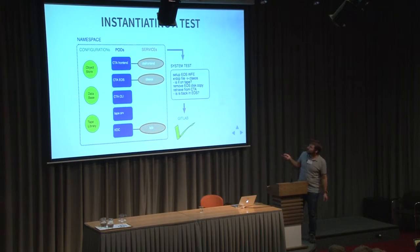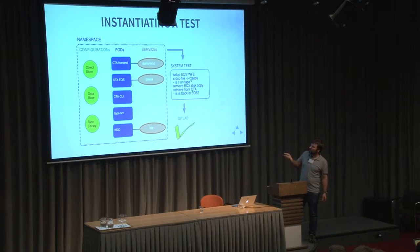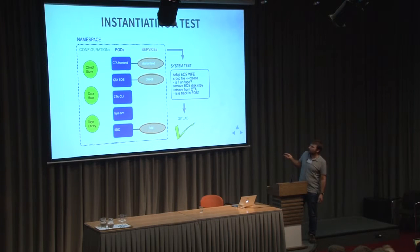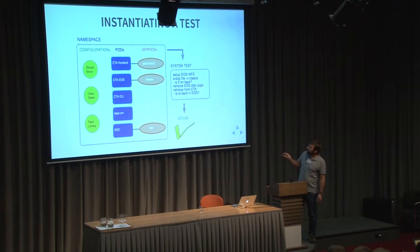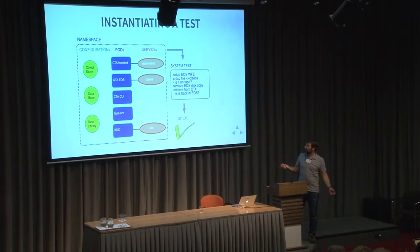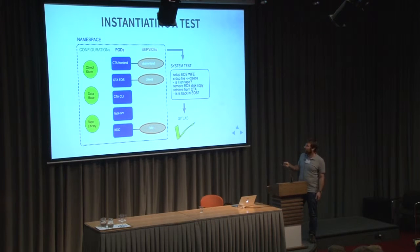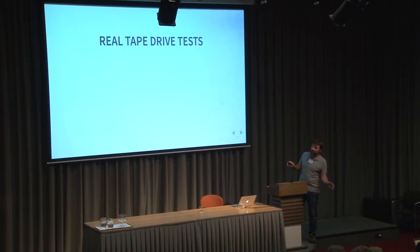Then we run the system test. Here's an example: we set up the workflow engine in EOS and then xrdcp a file — copy a file to the CTA-EOS instance and wait until it's on tape. Then we remove the disk copy from EOS, retrieve it from tape, and wait for it to be back in EOS. If it's okay, it shows as passed in GitLab and the test is successfully done. This is a simple one.